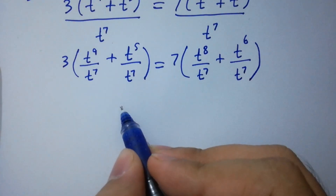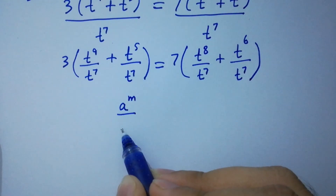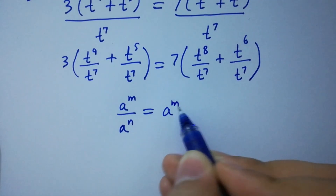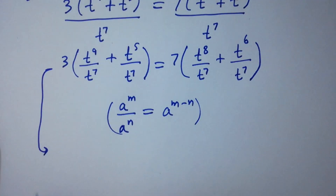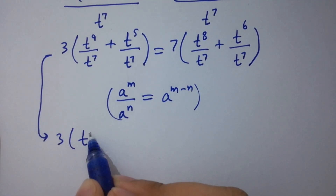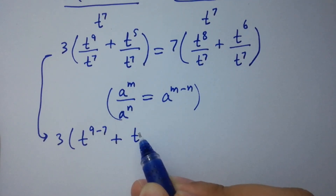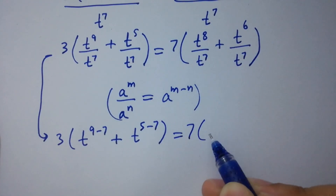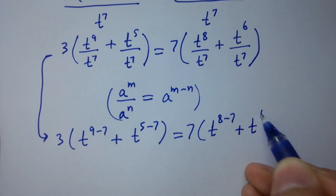As we know, a to the power m over a to the power n equals a to the power m minus n. Then it will be 3 times t to the power 9 minus 7, plus t to the power 5 minus 7, equal to 7 times t to the power 8 minus 7, plus t to the power 6 minus 7.